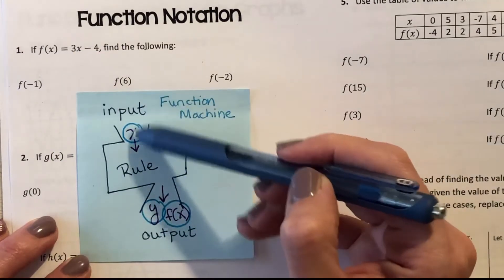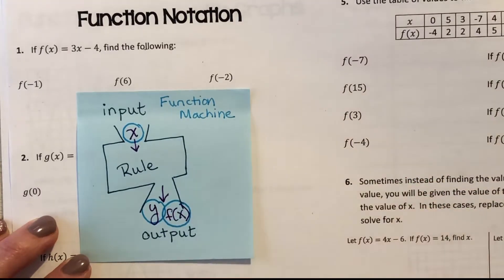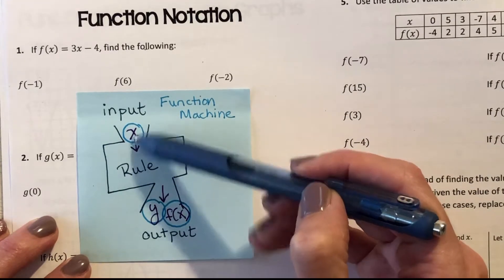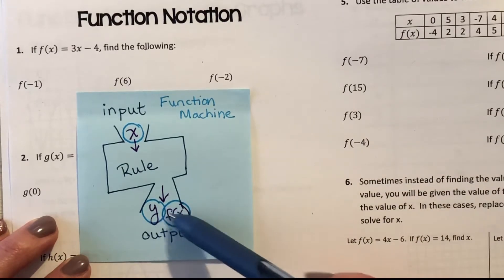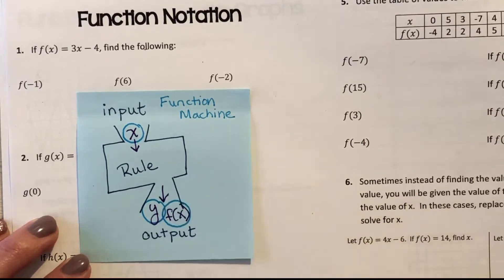Whatever I pop into my rule, what's coming out as a result? My x's are my inputs, and my y's, or f(x), these things are saying the exact same thing, that's my output.